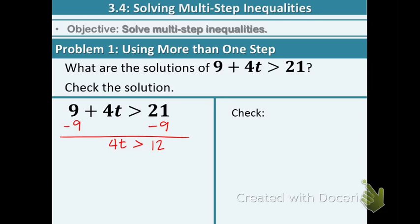Now we have one step left. We're going to divide both sides by 4, and we get t is greater than 3. So there's our solution.